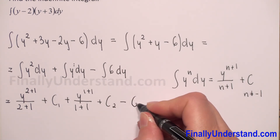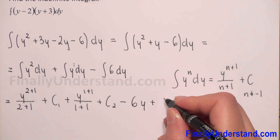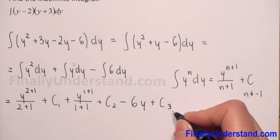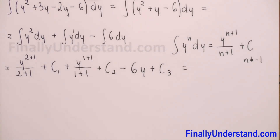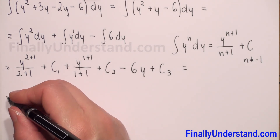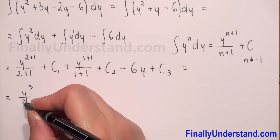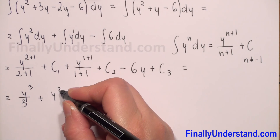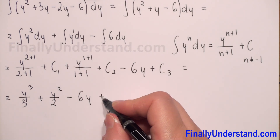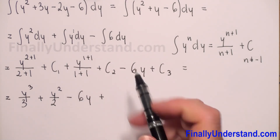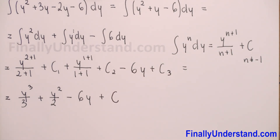For the integral of a constant, we copy the constant and multiply by y, plus constant C3. So this gives us y to the power 3 over 3, plus y squared over 2, minus 6y. Because we have constants C1, C2, and C3, we can substitute all of these with a single constant C. This is the final solution.